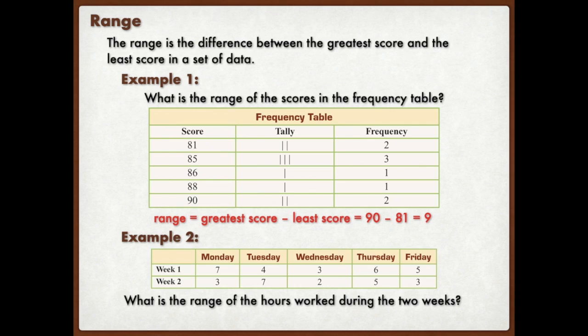Now let's take a look at example two. In this data table, we have two different weeks. But in those two weeks, we record how many hours we're working each day. So I want to know what is the range of hours worked during those two weeks. So I'm going to go ahead and add those up. During the first week, if I add up the total number of hours, I work 25 hours. But in the second week, I only work 20 hours. So I'm going to go ahead and subtract 25 minus 20 to give me a total of five hours as the difference.